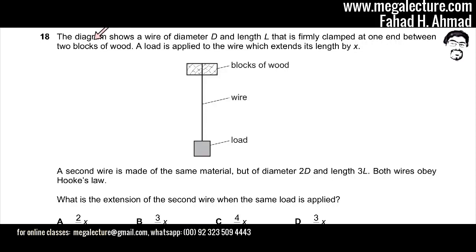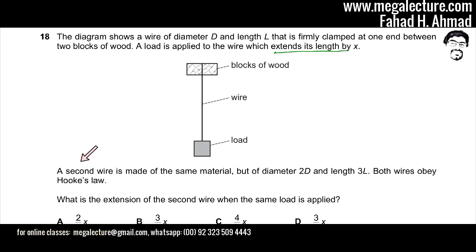The question states that the diagram shows a wire of diameter D and length L, firmly clamped at one end between two blocks. A load is applied to the wire which extends its length by X. A second wire is made of the same material but has diameter 2D and length 3L. Both wires obey Hooke's law.